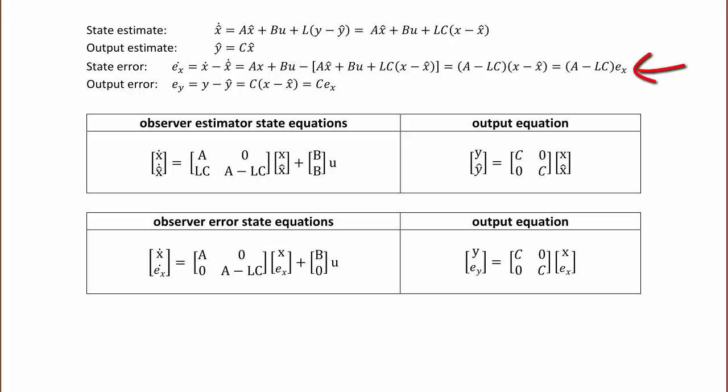The state error e_x-dot equals x-dot minus x-hat-dot, which equals A*x plus B*u (our original state equation) minus the estimated state A*x-hat plus B*u plus L*C times (x minus x-hat), which can be rewritten as the quantity (A minus L*C) times (x minus x-hat), which equals (A minus L*C) times the error e_x.